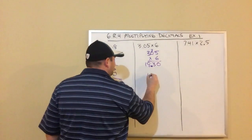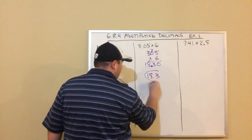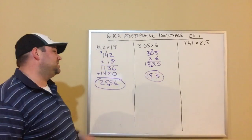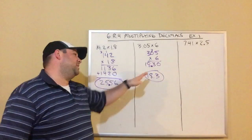So I get 18.30. Now when I get my final answer there, I'm just going to give it as 18.3 because anytime you have zeros at the end of a decimal, you don't need them. So instead of 18 and 30 hundredths, my answer is 18 and 3 tenths.